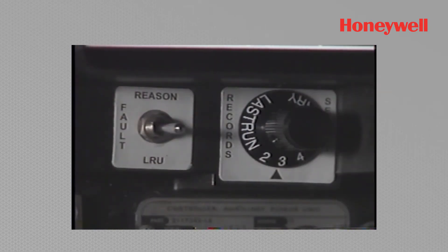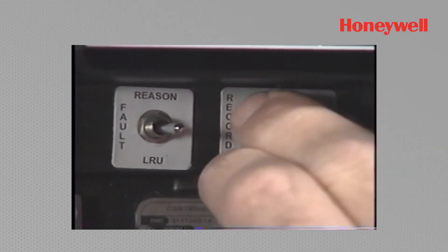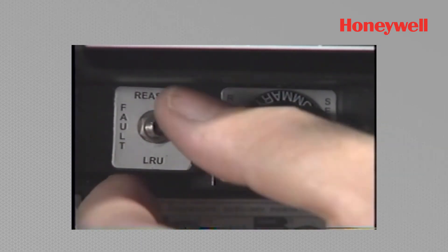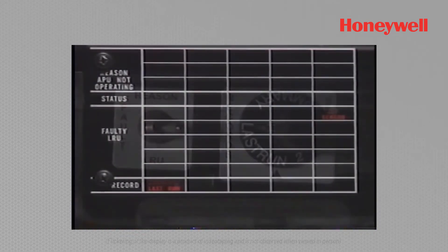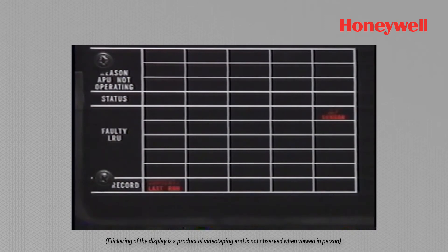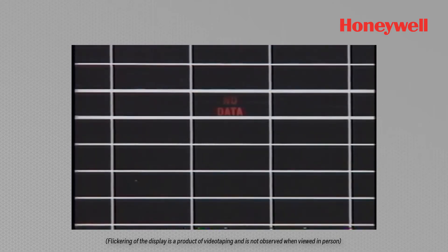Rotating the record select switch to the last run position will display real-time bite information. Positioning the fault toggle switch to LRU activates a continuous display of all LRU failures detected during the current run as they occur. If there are no faulty LRUs, no data will be displayed until an LRU fault occurs.